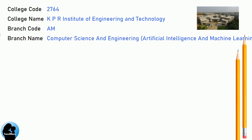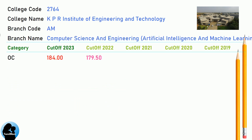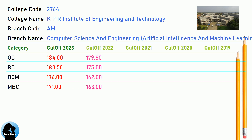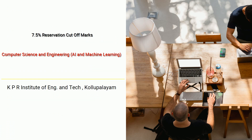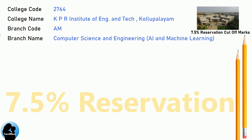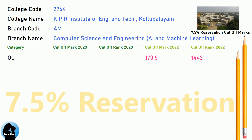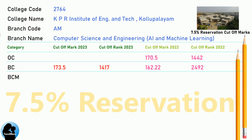DNA Cut-off for KPR Institute of Engineering and Technology in Computer Science and Engineering, Artificial Intelligence and Machine Learning. DNA 7.5 Reservation Cut-off for KPR Institute of Engineering and Technology in Computer Science and Engineering, AI and Machine Learning.